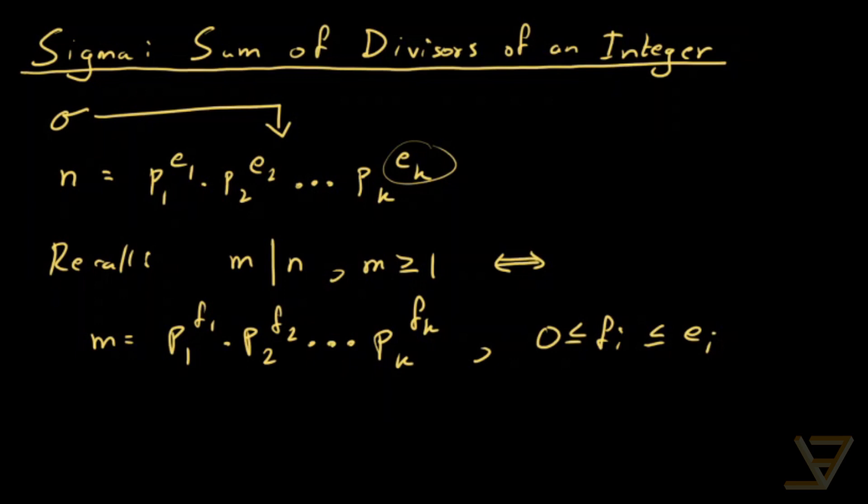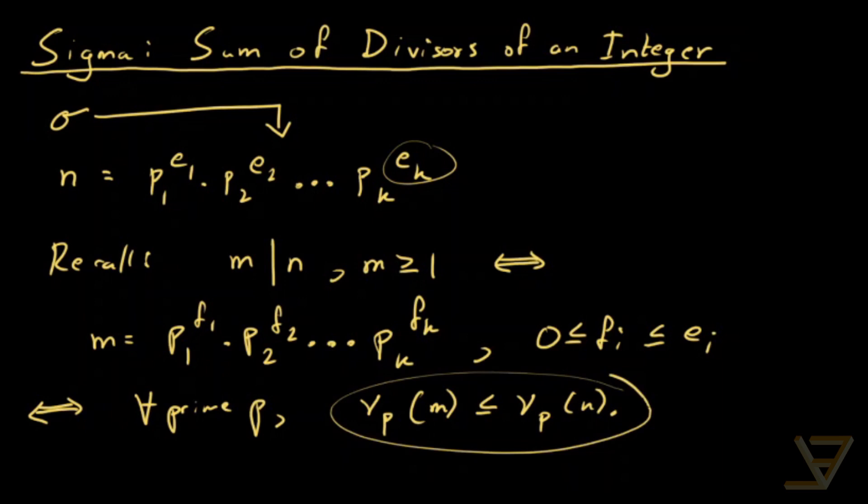And this is equivalent to another condition, which is that for all prime p, nu p of m is less than or equal to nu p of n. And this condition is fairly easy to prove, and then you can show that it's equivalent to the first one that I mentioned.